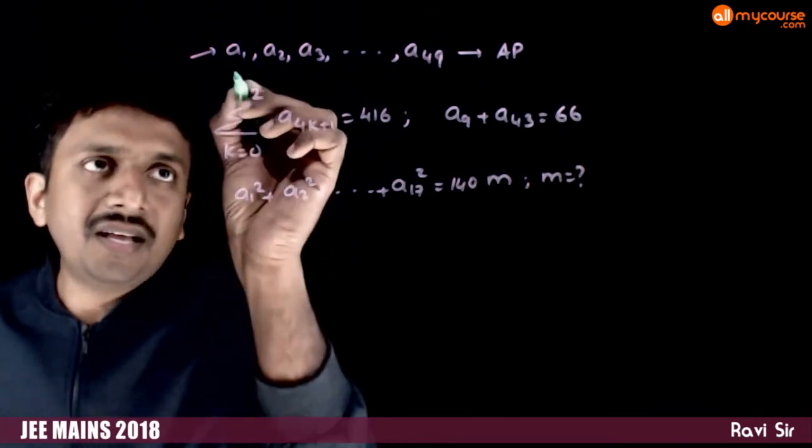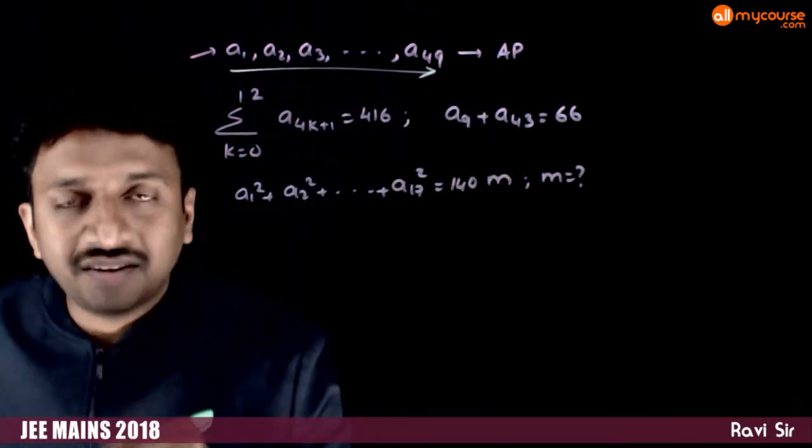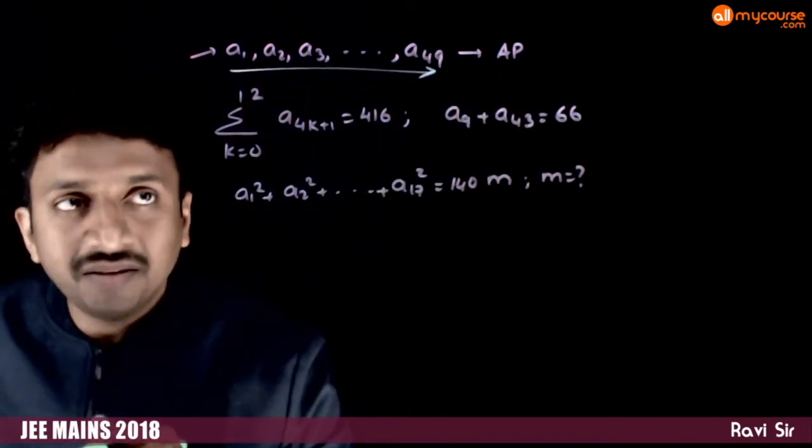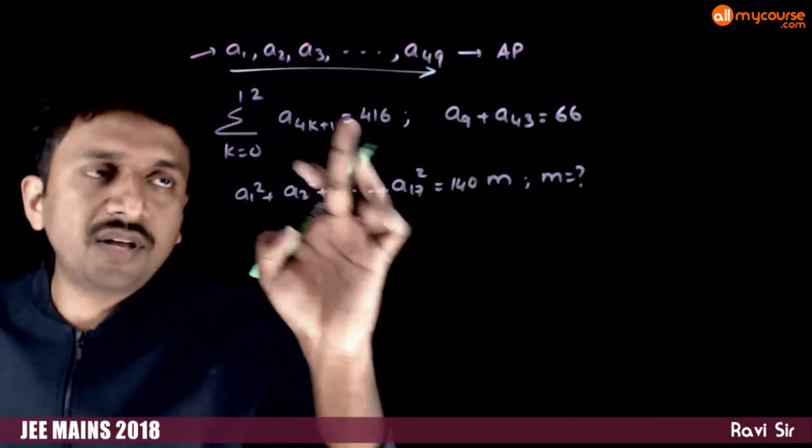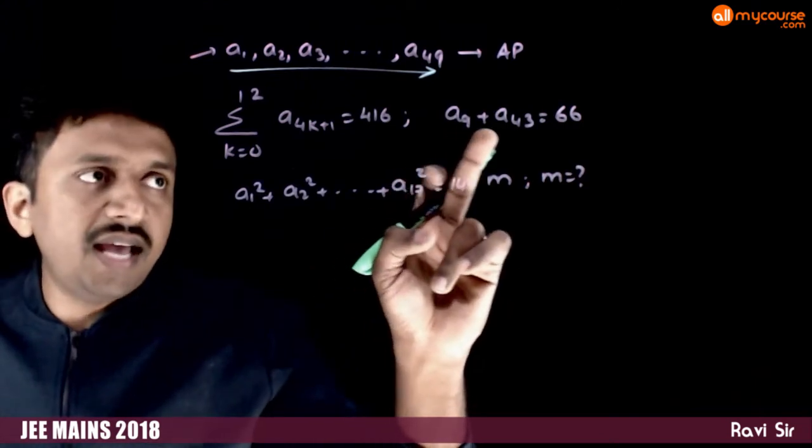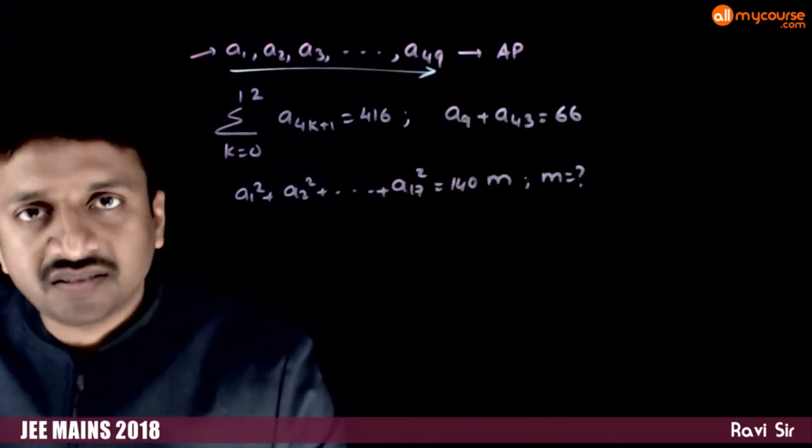In this question, you're given that a1, a2, a3 up to a49 are in AP. Sigma k=0 to 12, a4k+1 is 416, and a9 plus a43 is 66.